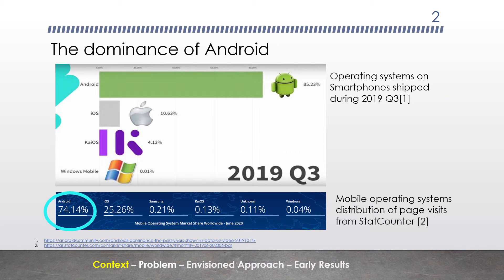Android is definitely the dominating mobile operating system in terms of how many mobile devices have installed Android, and also in terms of the number of web page visits according to StatCounter, a leading web traffic analysis site, that come from Android devices.